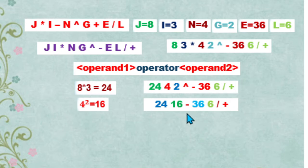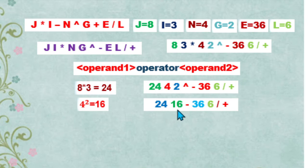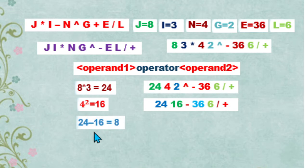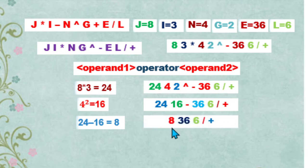We scan again and look for the first operator. We have 24, 16, then the subtraction operator — this is our first operator. The immediate two operands to its left are 24 and 16. So 24 is operand 1 and 16 is operand 2. We perform subtraction: 24 minus 16 is equivalent to 8.